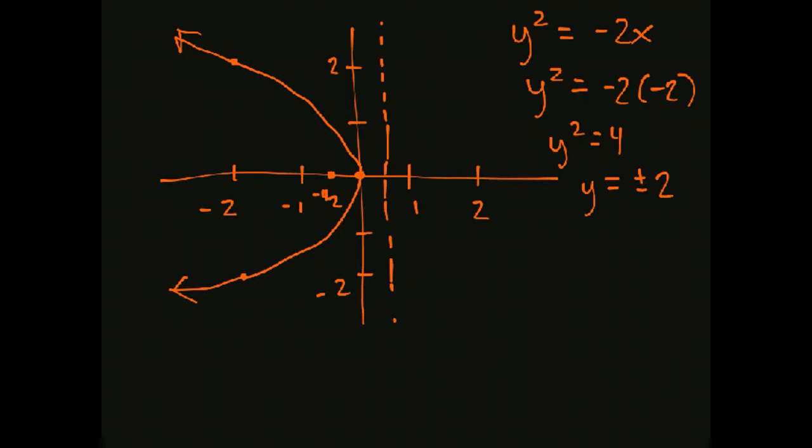So there we go there's a rough graph of our parabola that we've got here. Now the next concept that we want to talk about is focal diameter and that is how wide is the parabola.